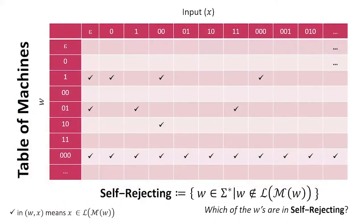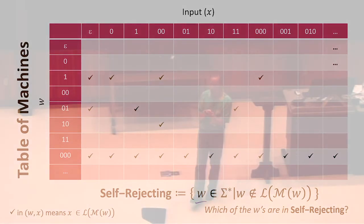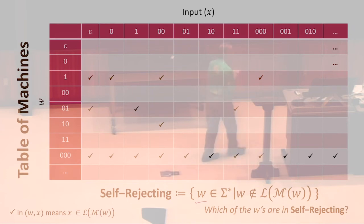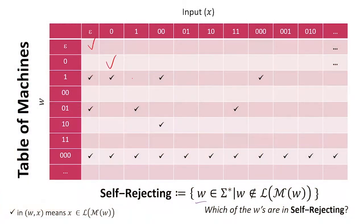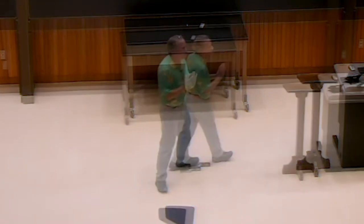So we've defined the self-rejecting language. How do we identify the strings that are in the self-rejecting language by looking at the table? It's going to be on the diagonal — if the diagonal entry is empty, we are in self-rejecting. If the diagonal has a check, we accepted ourself, and we are not in self-rejecting. If you remember some of our cardinality proofs, going down diagonals might start to worry you a little bit.